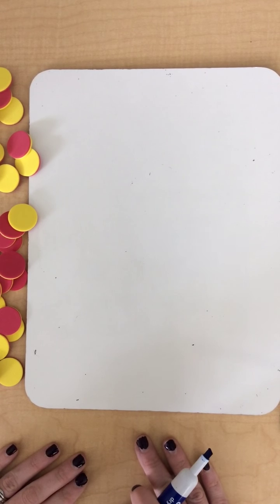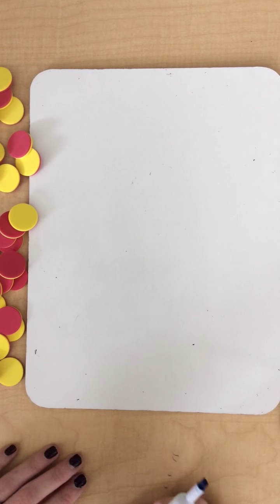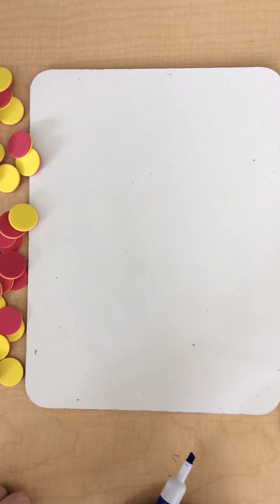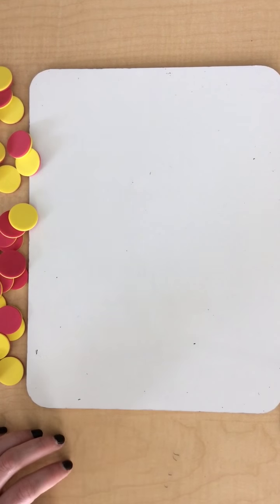All right, so we're going to be looking at the unknown factor activity and we're going to work to solve one of the expressions. I'm going to show you how that would look in case you were wondering how to do the activity. So here's a quick step-by-step on how to do that.